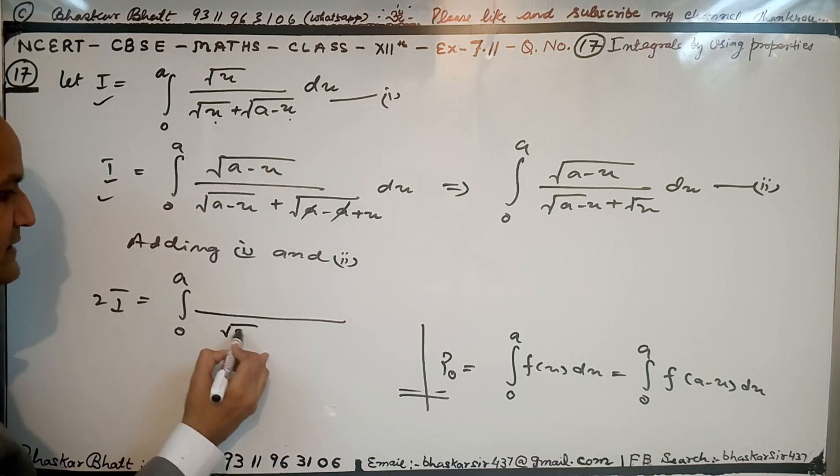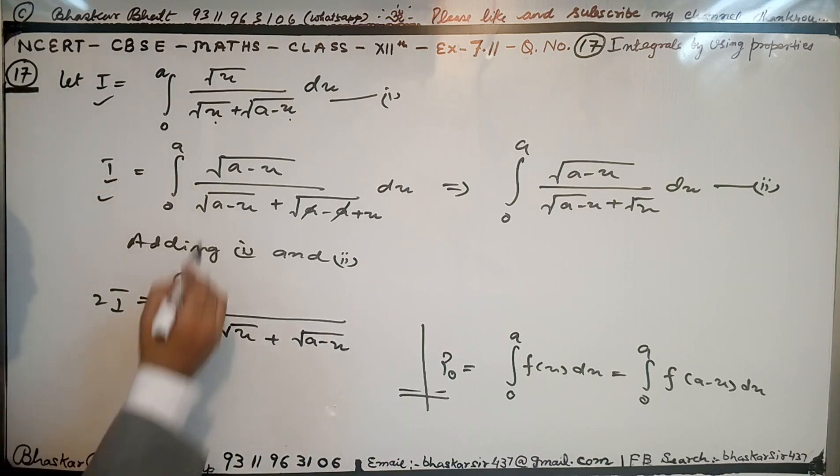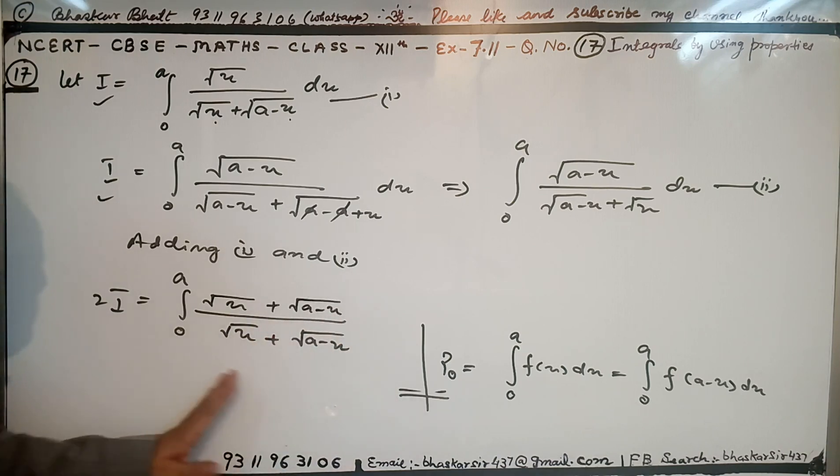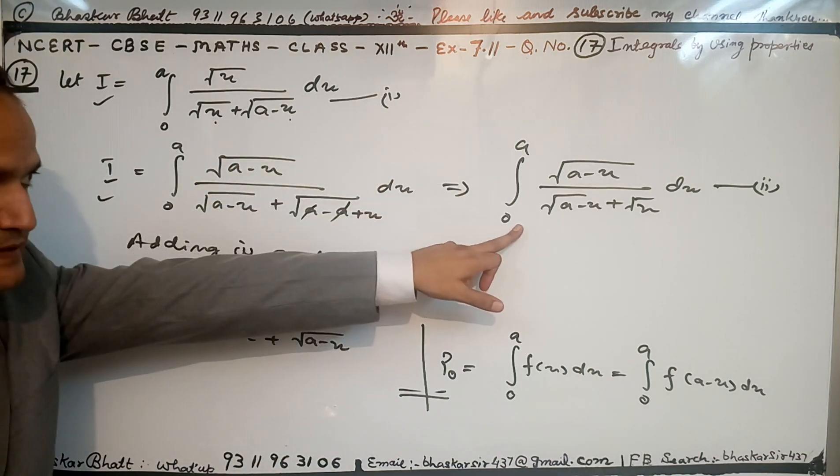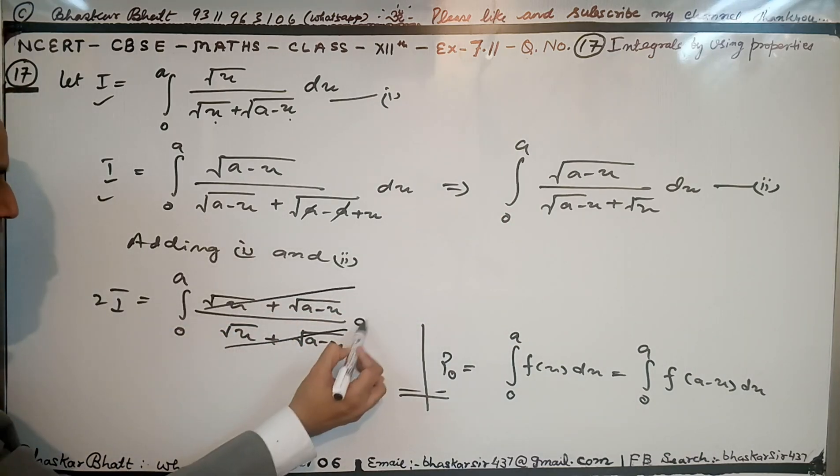The denominator is root x plus root(a minus x). The numerator is root x plus root(a minus x) when we add the first and second equations. Now, canceling, we have only one dx.